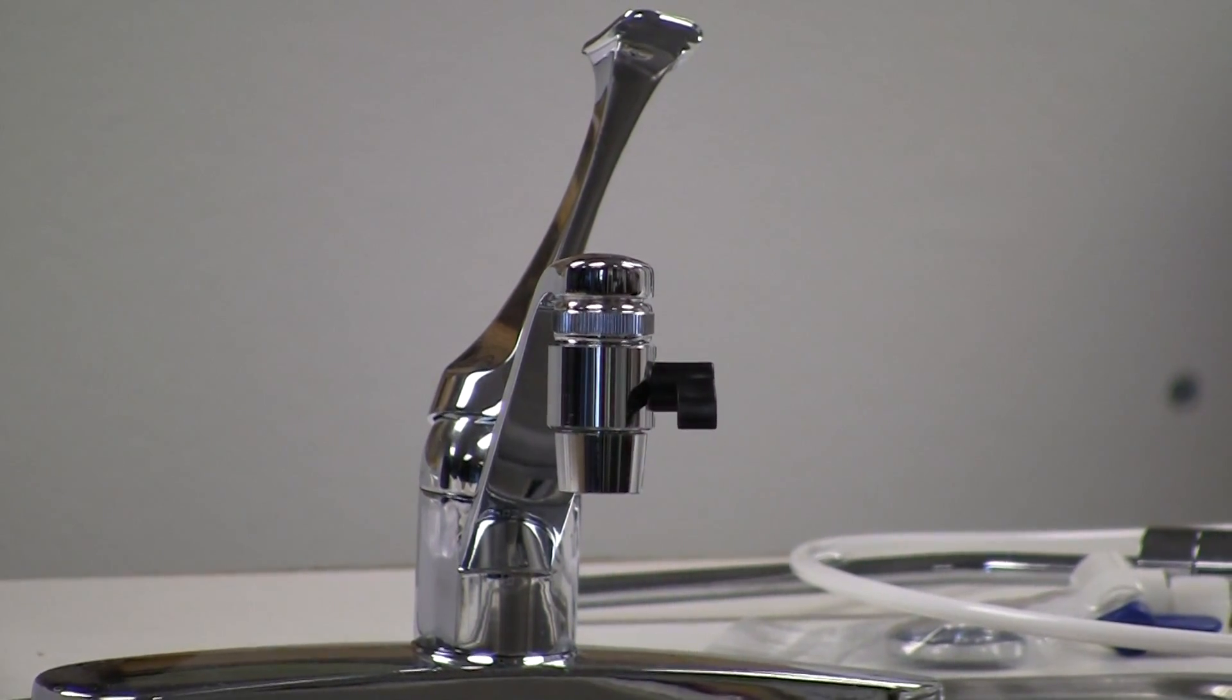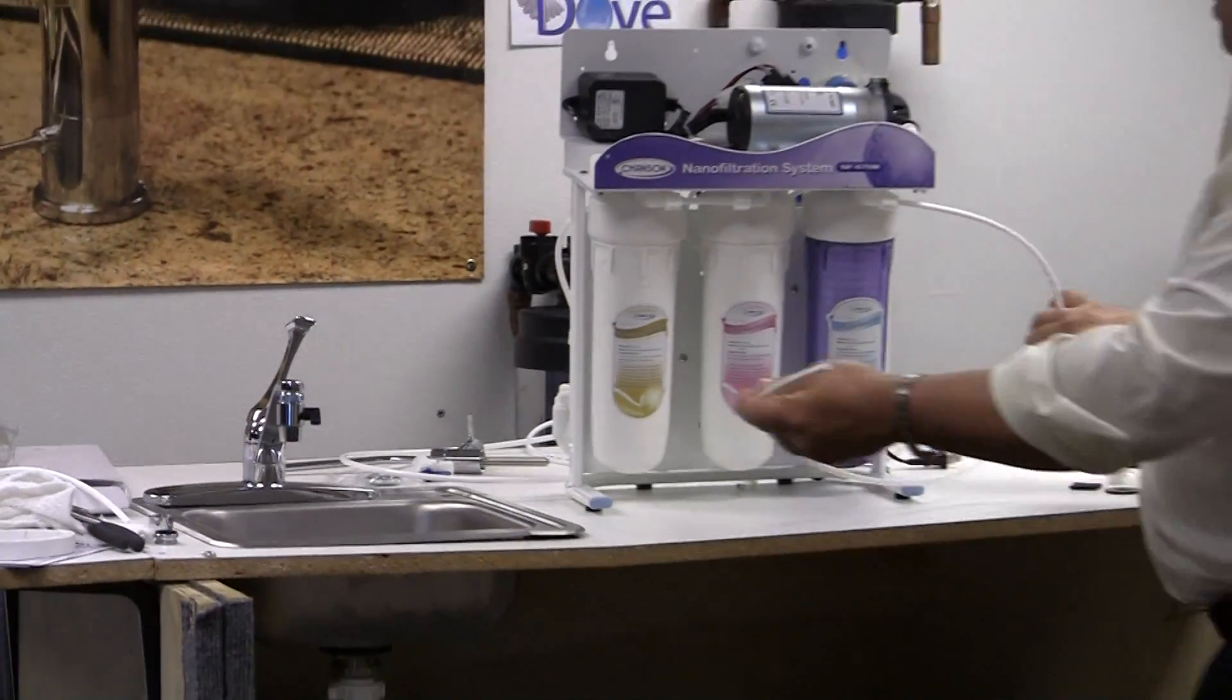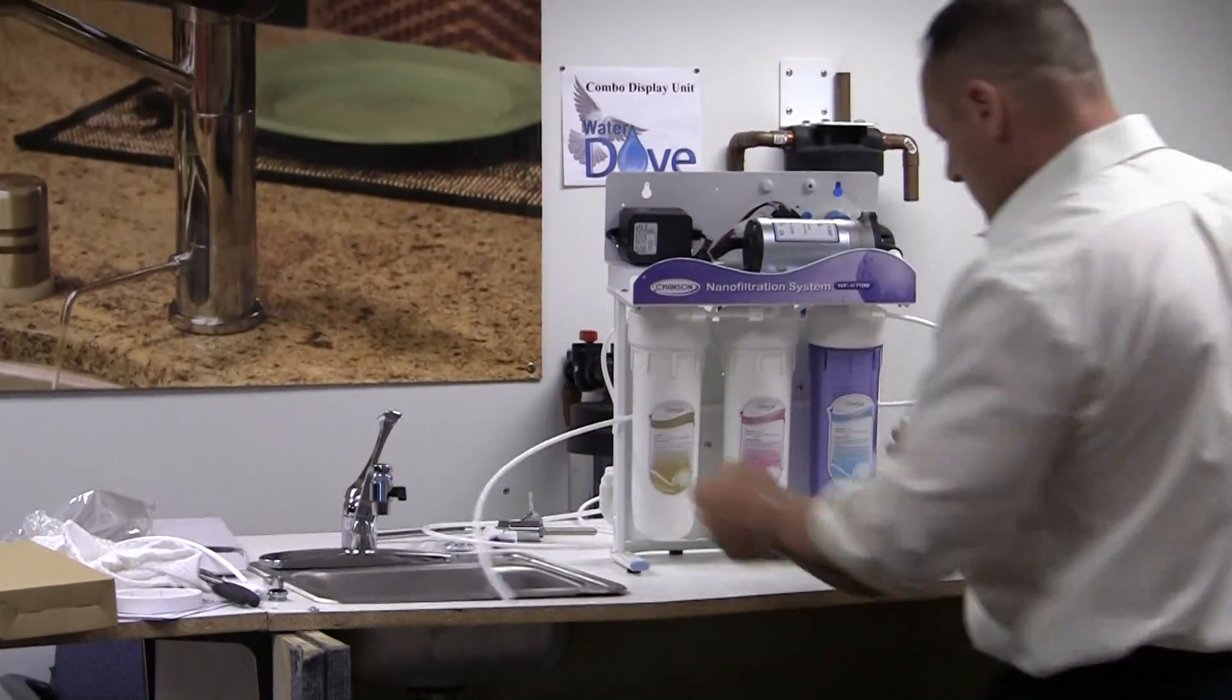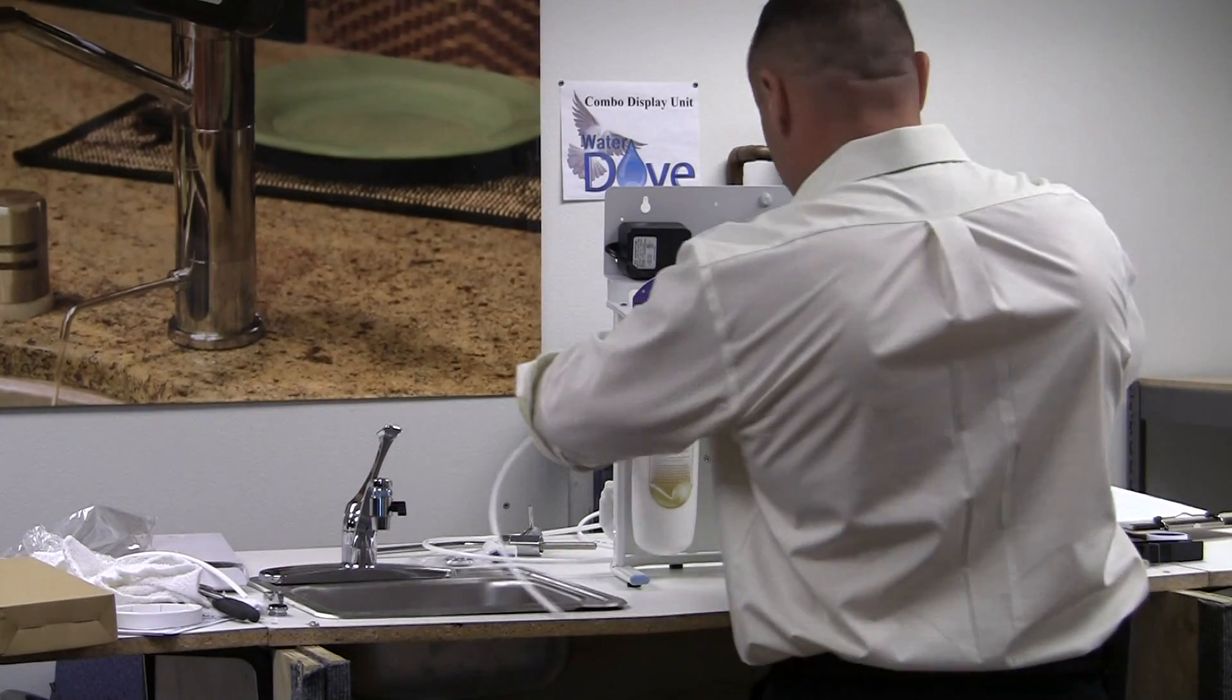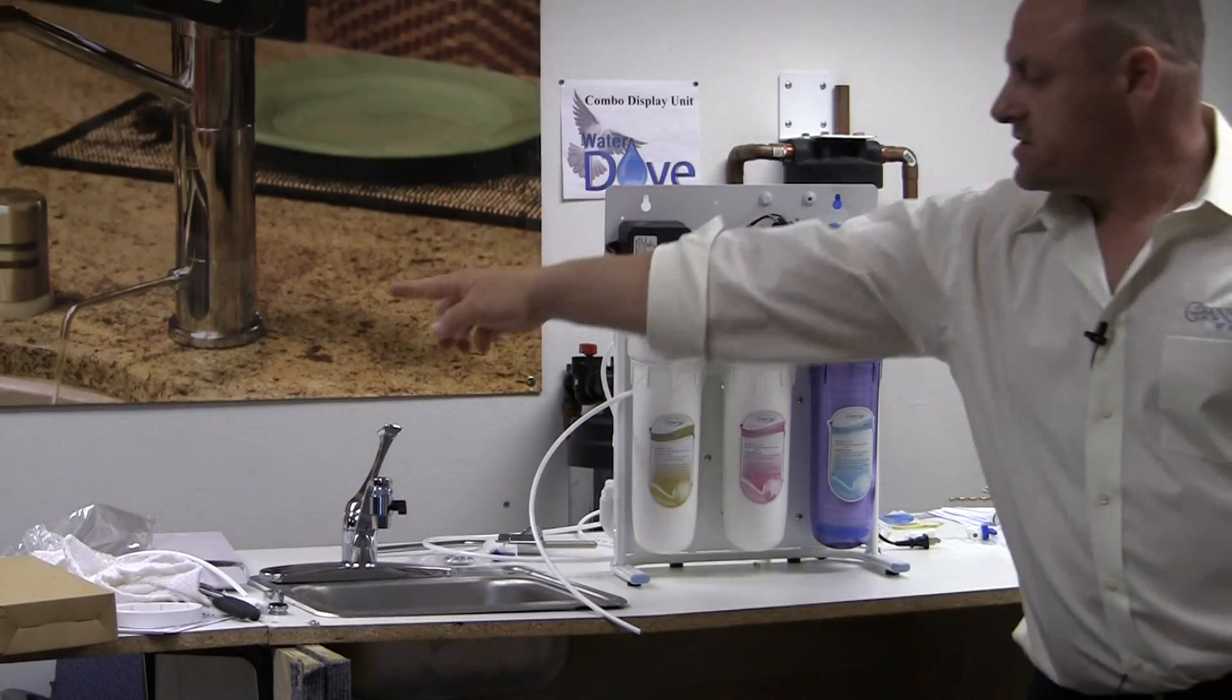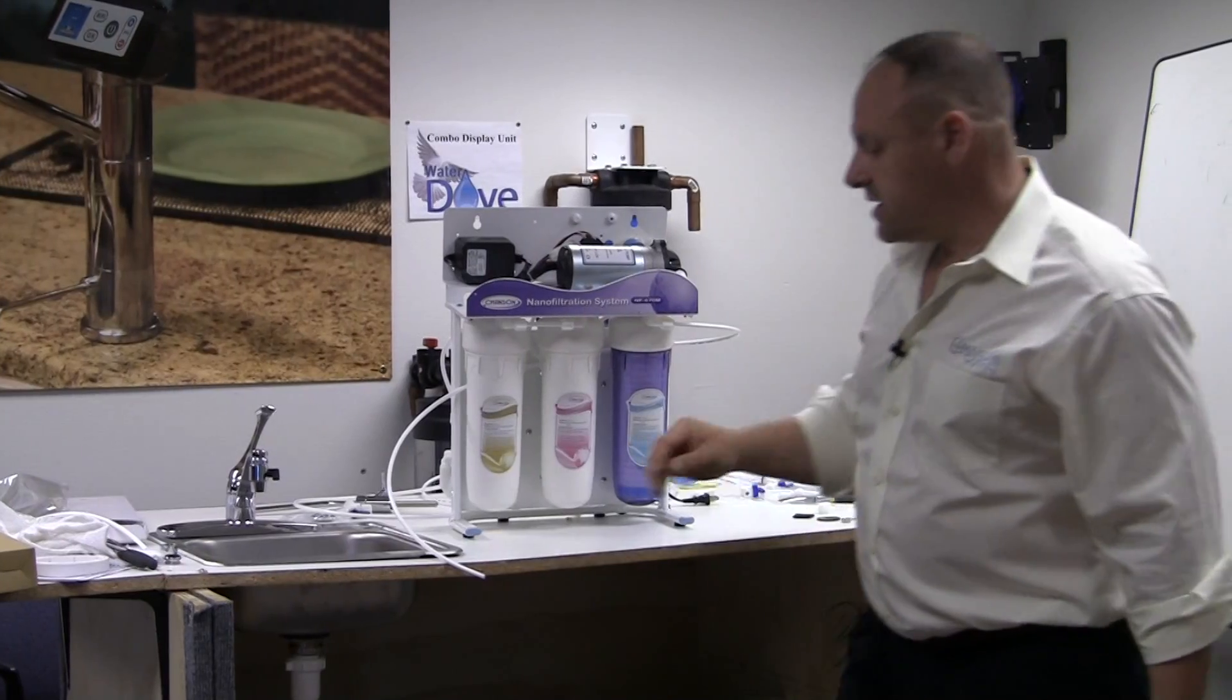The tube that feeds the nano filter, you can run it behind the filters like this. You see what I just did? I took the tube and slipped it behind all three filters. Of course, if the nano is sitting on this side of the sink, you won't need to do this, but for our demonstration, it's on the right side.